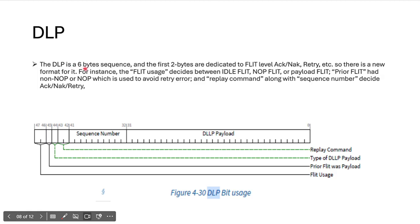The DLP (Data Link Packet) has six bytes with a sequence field. The first two bits are dedicated to fleet-level ACK or NAK and retransmission. The DLP payload contains: sequence number, replay command, type of DLP payload, prior FLIT, past payload, and FLIT users. FLIT users decide whether it is an idle FLIT, now FLIT, or payload FLIT. The DLP FLIT is not stored inside the physical layer, meaning it has no retransmission buffers — it is just passed to the receiving side. Only DLP FLITs are stored inside the data buffers.